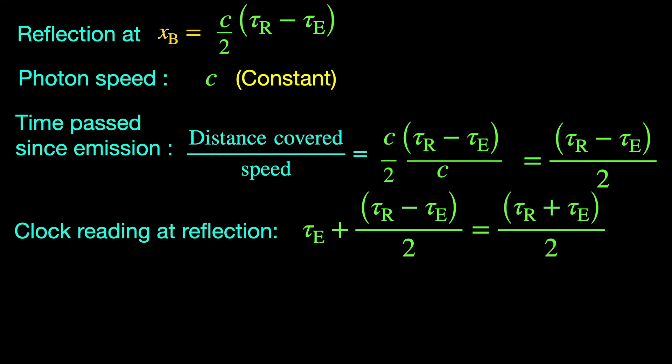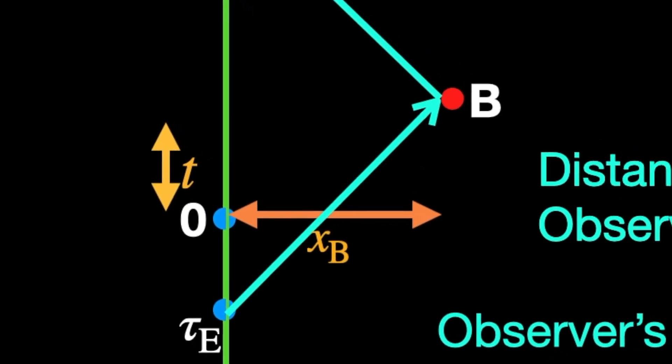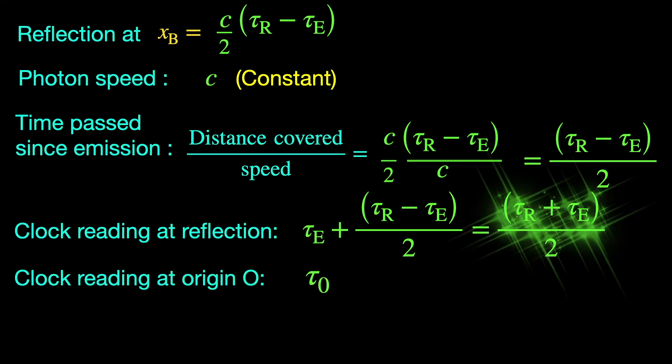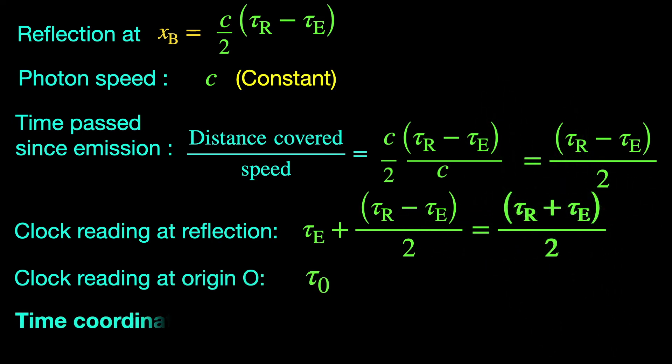The time coordinate of B with respect to the chosen origin at O is just the temporal distance between the events B and O. So, we subtract the observer's clock reading at event O, let's say tau_0, from that at B to get the time coordinate TB.